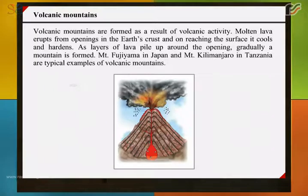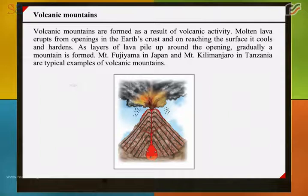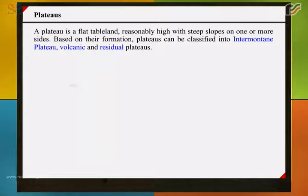Volcanic mountains are formed as a result of volcanic activity. Molten lava erupts from openings in the earth's crust and on reaching the surface it cools and hardens. As layers of lava pile up around the opening, gradually a mountain is formed. Mount Fujiyama in Japan and Mount Kilimanjaro in Tanzania are typical examples of volcanic mountains.